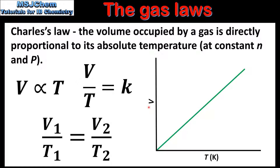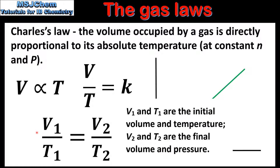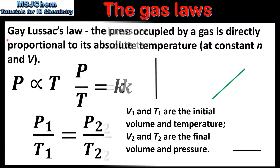On the right we have a graph of volume against absolute temperature in Kelvin. From the graph we can see that volume is directly proportional to temperature in Kelvin. Charles' law can also be represented as V1 over T1 is equal to V2 over T2.